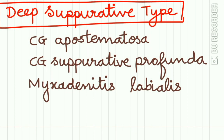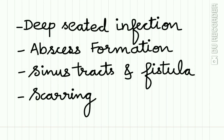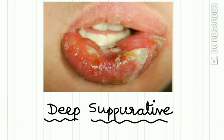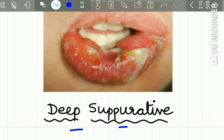The deep suppurative type is also called Cheilitis Glandularis Apostematosa, Cheilitis Glandularis Suppurativa Profunda, and Mixed Adenitis Labialis. This type is characterized by a deep-seated infection with abscess formation, sinus tract formation, fistula formation, and scarring of the lips.